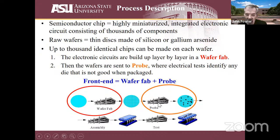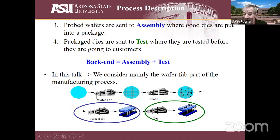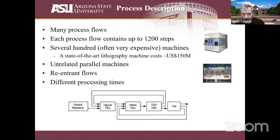Wafers are sent to assembly, where they're put into packages, and then sent to final test before being shipped to the end customer. This is called the back end — assembly and test. We'll mainly talk about things at the wafer fab level, but there are really interesting scheduling problems in the back end as well.